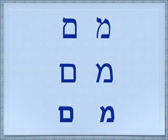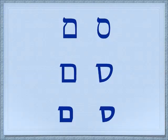Here are three different fonts with the regular Mem. The regular Mem has the opening at the bottom, and the final Mem, the Mem Sofit, is closed all the way around. Here are three fonts including the Samech, which we learned earlier, compared to the Mem. The Samech is much rounder and the Mem is going to have square parts at the bottom.